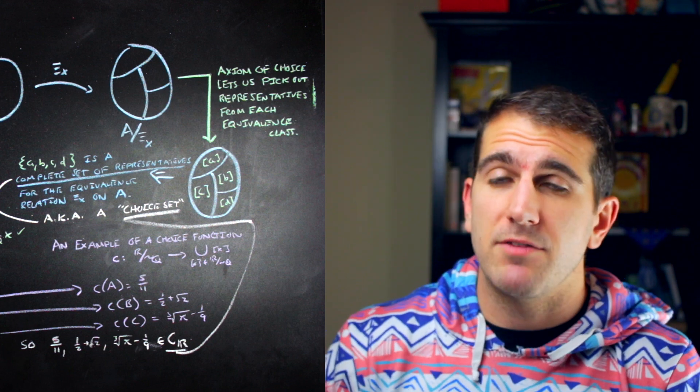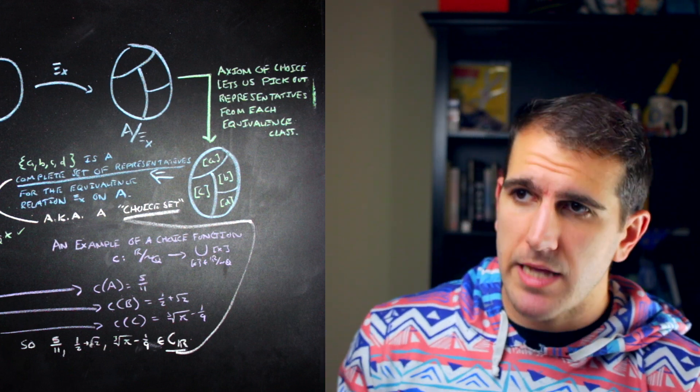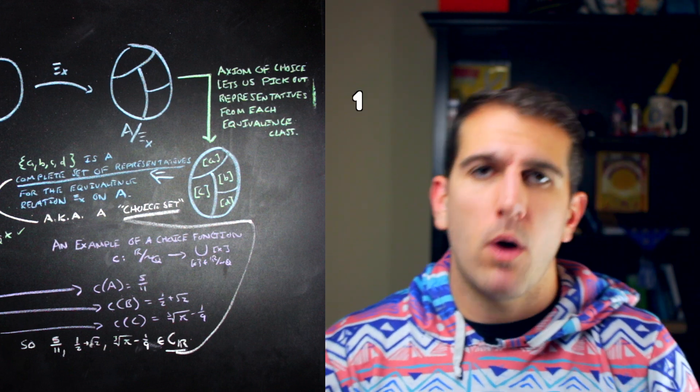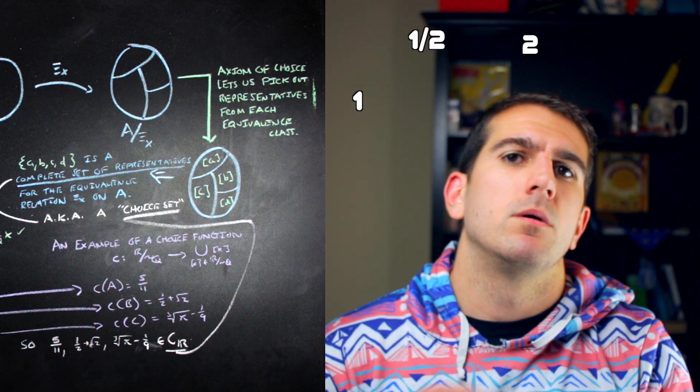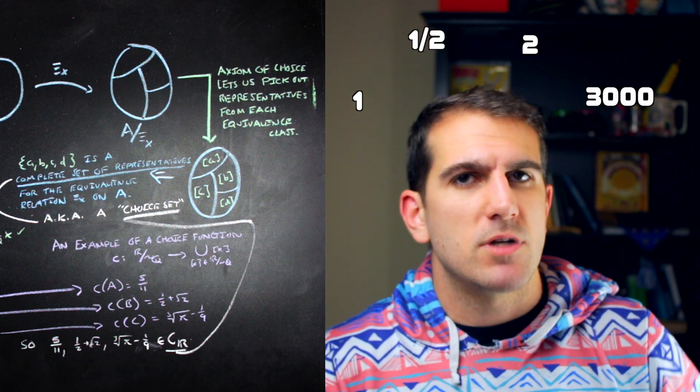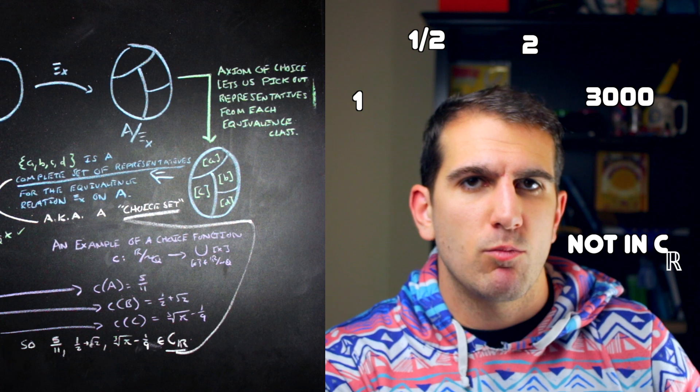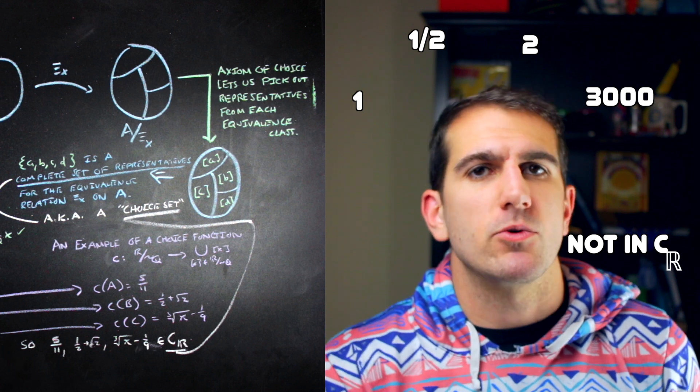Because 5/11 is in the choice set, numbers like 1, 1/2, 2, and 3000 can't be in the choice set as well, and that uniqueness property is going to be core to the following argument that gets us to our paradoxical set.